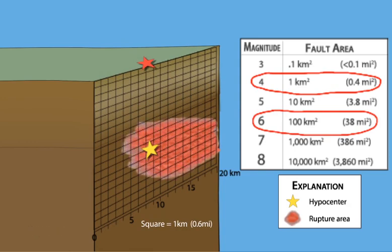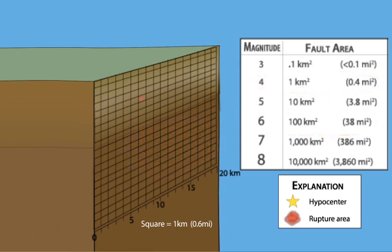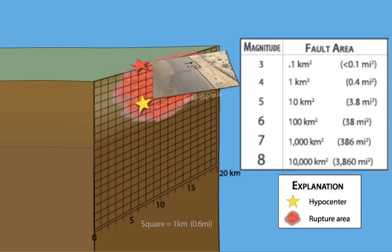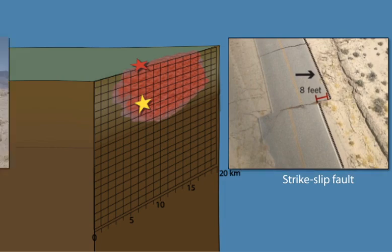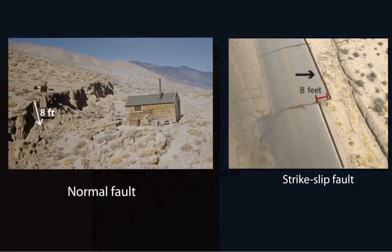Often there is no surface faulting at the epicenter. But if an earthquake is shallow and the rupture area grows vertically, it may offset the ground surface, or create a fault scarp.